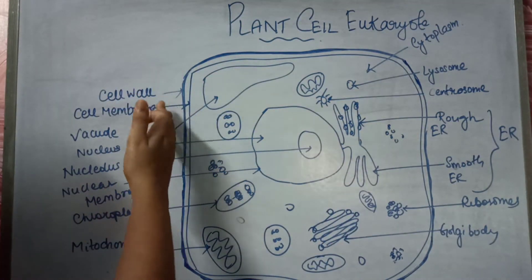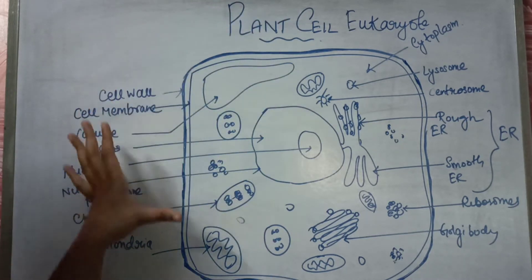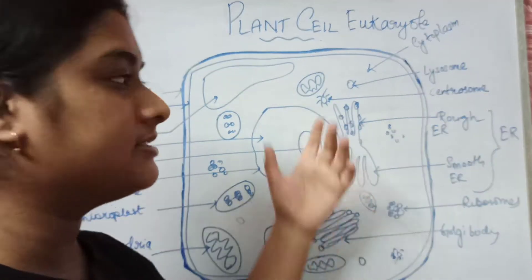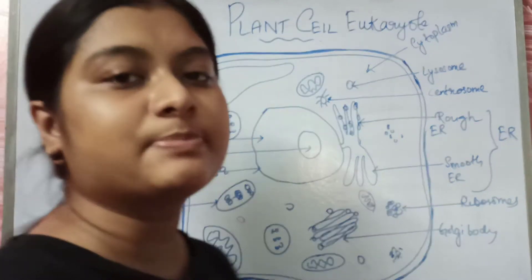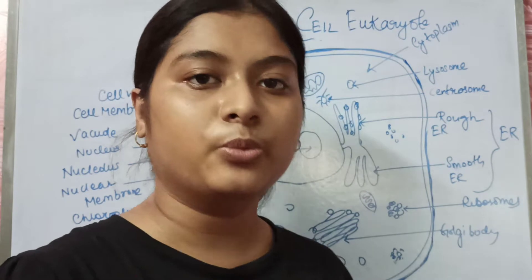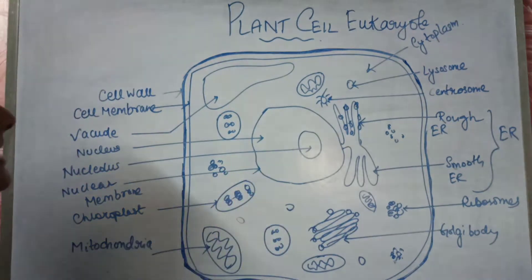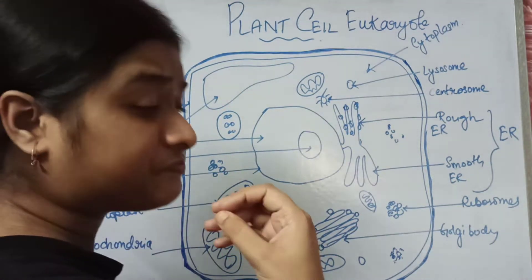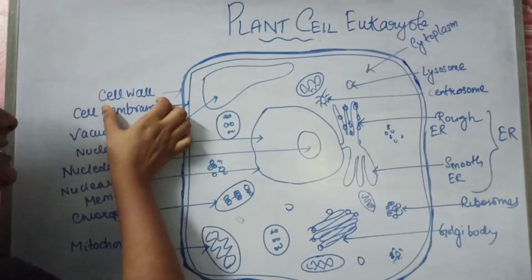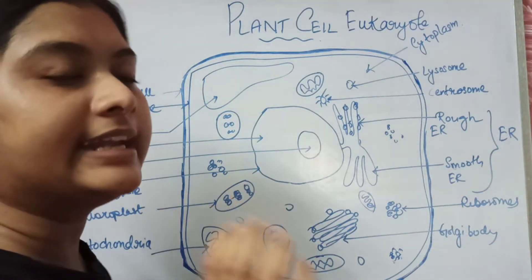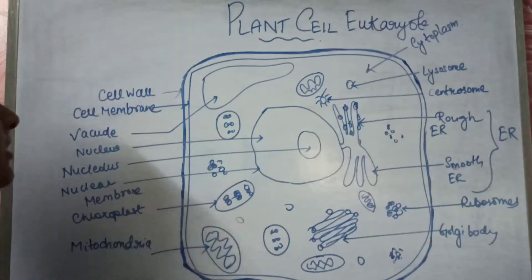After the cell membrane comes an outer membrane known as the cell wall, present outside the cell membrane. See this thick lining — that is the cell wall. The cell wall is made up of cellulose, and some cell walls also contain lignin, pectin, and hemicellulose, but the major component is cellulose. The main function of the cell wall is to give the plant cell its structure and rigidity.